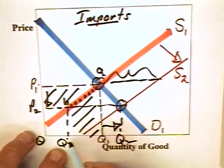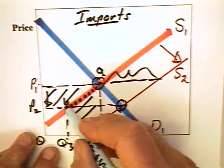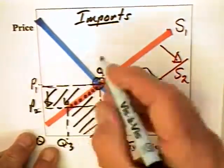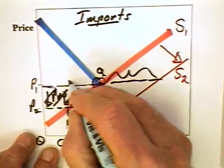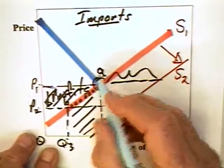So when they cut back on production, they eliminate this much cost, but they have lost this much in the way of revenues. They have lost profits equal to that area right there, P2, P1, A, B.